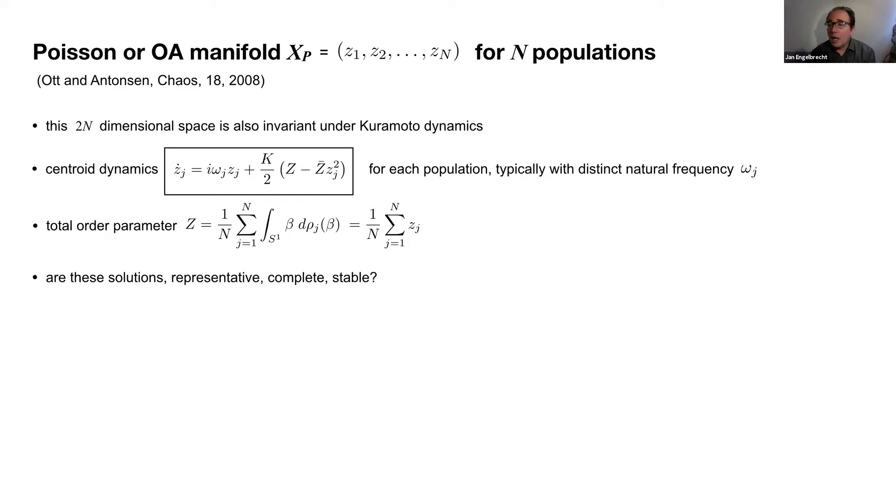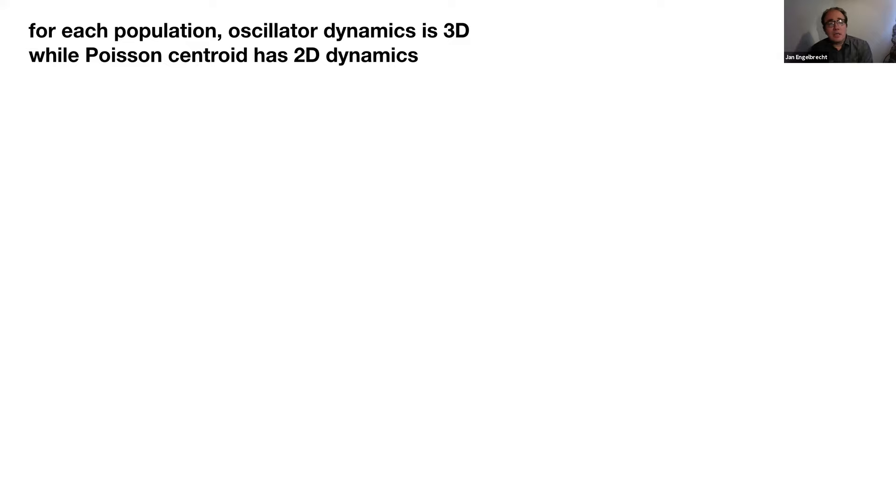There's a lot of analysis on the ODE manifold. But an important question is, while these are solutions, are they representative? Are they stable? Are there other solutions? It's a very successful technology. But if you just think for a moment, there's potentially something missing. What is curious is I've made this argument that the oscillator dynamics is three dimensional, coming from this Mobius group. But the Poisson centroids are two dimensional. So how does that relate?